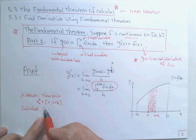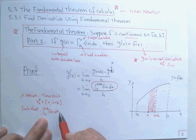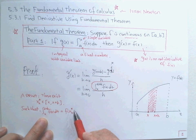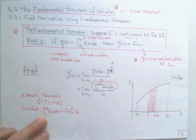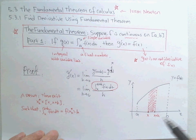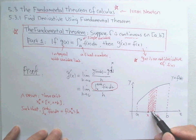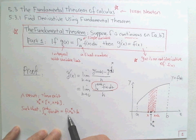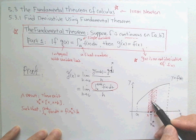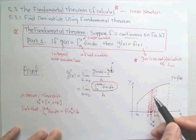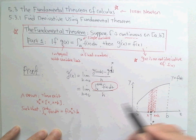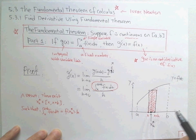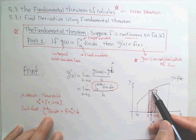The integral from x to x + h of f(t) dt can be rewritten as f(x*, h) times h — the height f(x*) times the width h. This is exactly the area of a rectangle, which equals the area under the curve. We get this result from the Intermediate Value Theorem from Calc 1.